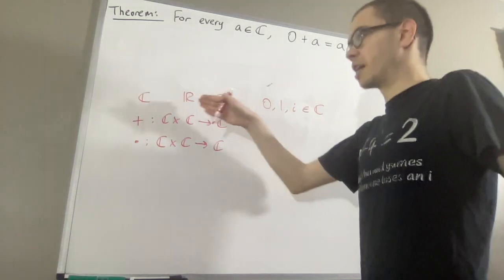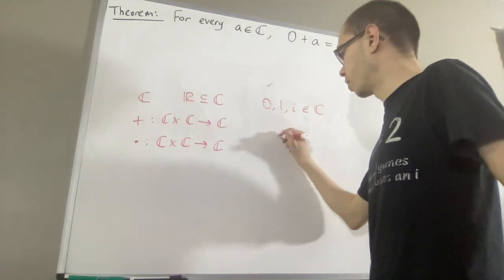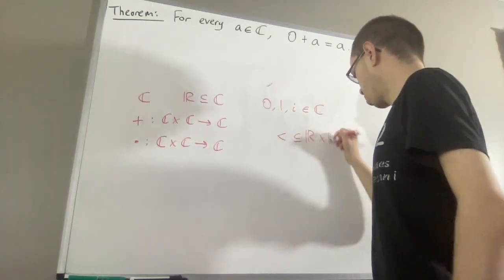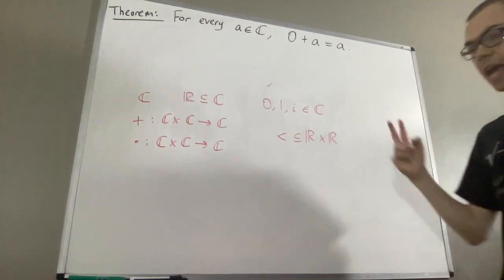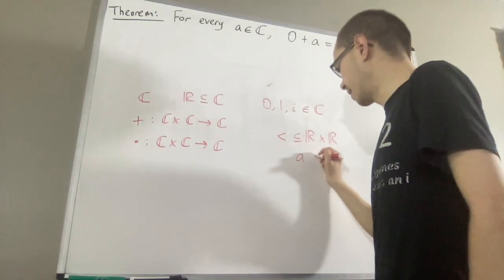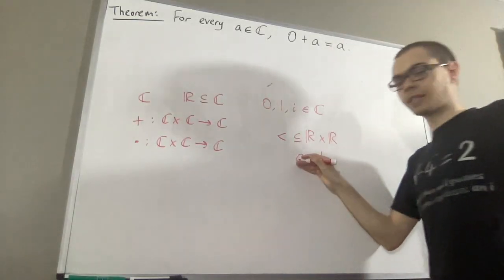And also we have a relation on the set of real numbers, called the less than relation. So given any two real numbers a and b, it might be the case that a is less than b, and we would write that like this.